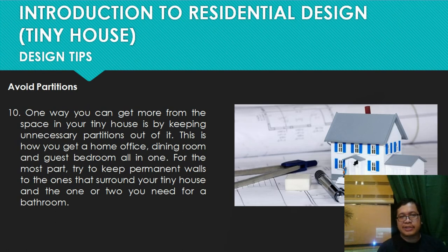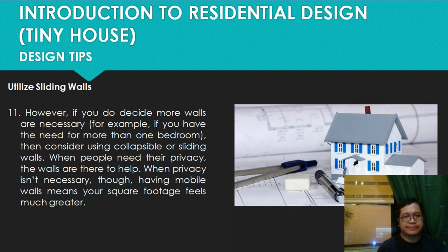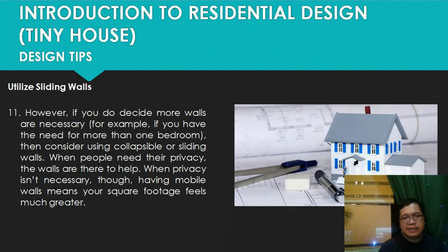Number ten: avoid partitions. One way to get more from the space in your tiny house is by keeping unnecessary partitions out of it. This is how you get a home office, dining room, and guest bedroom all in one. Try to keep only the permanent walls that surround your tiny house and the one or two needed for a bathroom. Number eleven: utilize sliding walls. If you do need more walls — for example, for a bedroom — consider using collapsible or sliding doors. When privacy is needed, the walls are there, and when it isn't, the mobile walls make your square footage feel much greater.